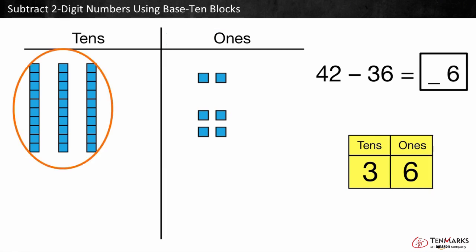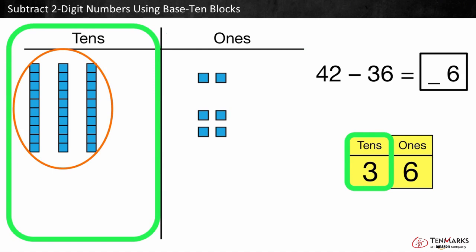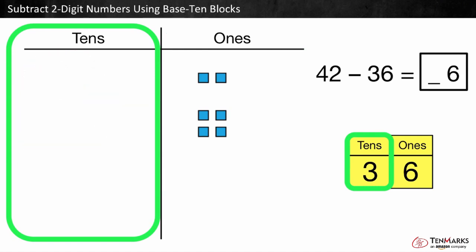Now we subtract the 10s. Can we take three 10s away from three 10s? Yes, there are zero 10s left.